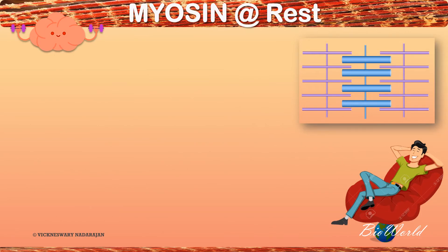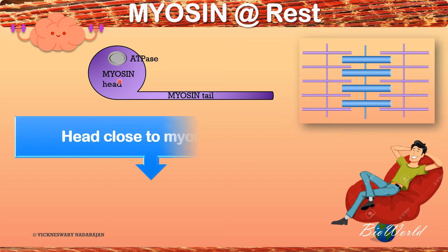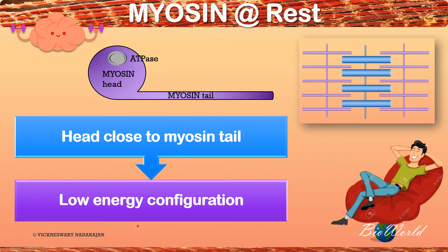Next we see what's happening to the myosin when the muscle is relaxed. Myosin has a head and a tail as well as the enzyme ATPase on the head. When the muscle is at rest, the myosin head will lie close to the myosin tail, and this is called a low energy configuration.